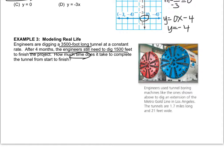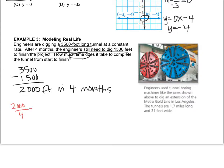Well, what we can do is we can kind of figure out how much they're doing per month and then see what the plan will be in order for it to get finished. So if they start at 3,500 and 4 months later, they still have to do 1,500, that means that they dug 3,500 minus 1,500. So they dug 2,000 feet in 4 months. So if I do 2,000 divided by 4, I get 500 feet per month.